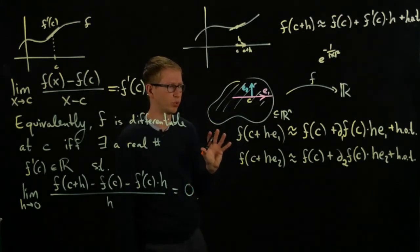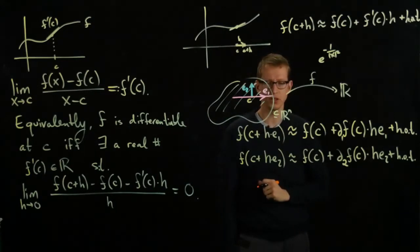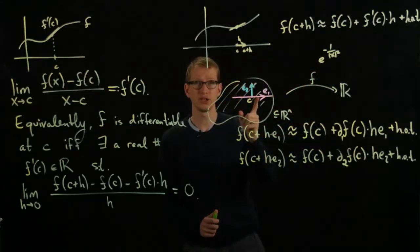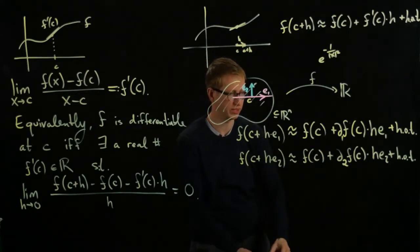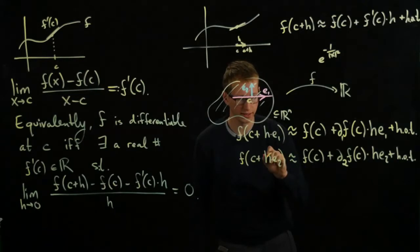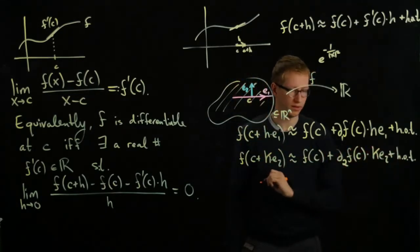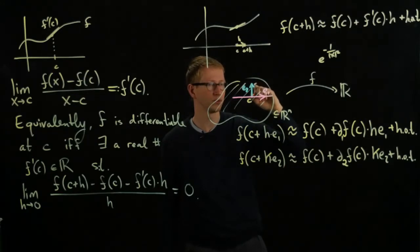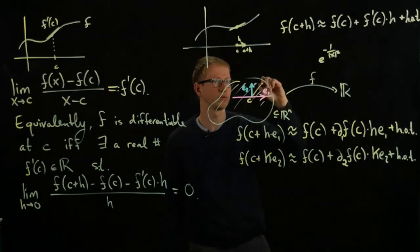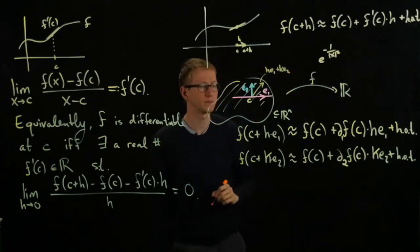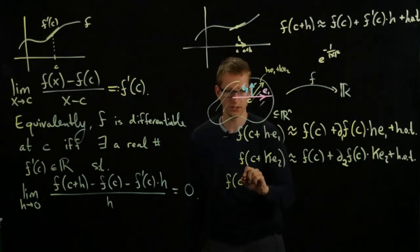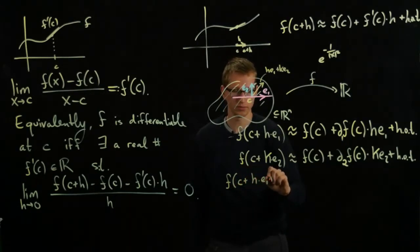And now here comes the really key, important observation, and this observation is that now let's consider an arbitrary linear combination of these two elements. And to actually make this a little bit more consistent, let me call this letter K instead of H. And now let's consider an arbitrary linear combination. The linear combination is just the sum of these two. So we'll look at H E1 plus K E2. And again, as long as H and K are small enough, this is still in the domain of the function.